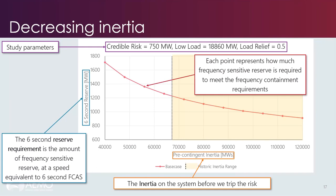Each point on the curve represents the amount of reserve required under the modelled system conditions to meet the FOS. As we look along this curve, as we move into the lower ends of inertia — particularly beyond historical levels — the required modelled reserve to meet the FOS kicks up in a non-linear manner. That needs to be managed accordingly as we go into lower and lower levels of inertia.